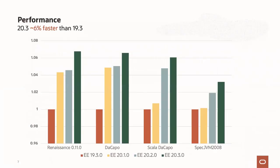In terms of numbers, 20.3 is about 6% faster than 19.3. So in one year, we've seen a fairly significant performance improvement built on compiler optimizations and other platform improvements. Looking at the chart, the red columns are our baseline of 19.3, about one year ago, and you can see continuous improvement through 20.1, 20.2, and now 20.3, with throughput going up consistently.